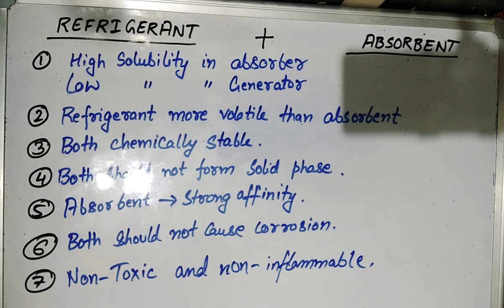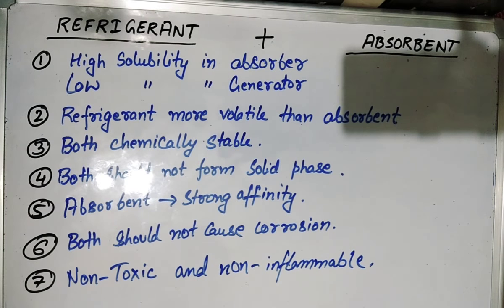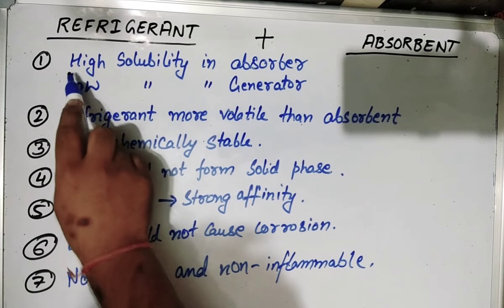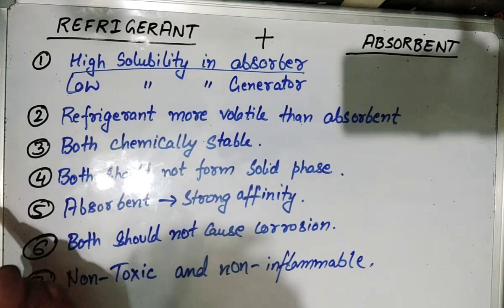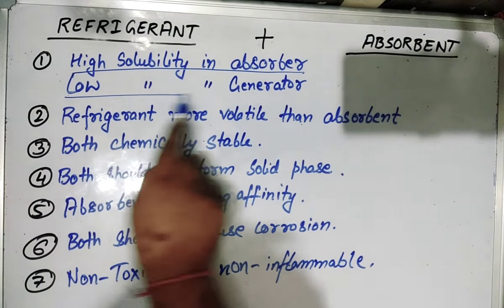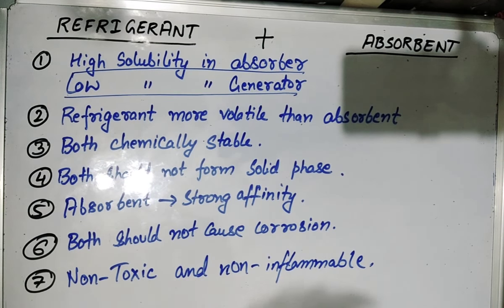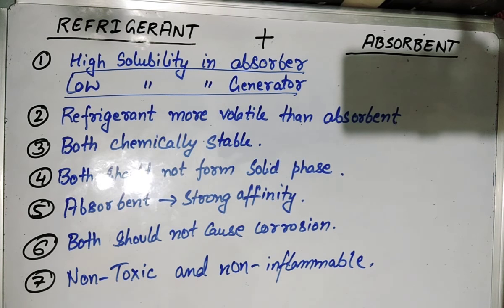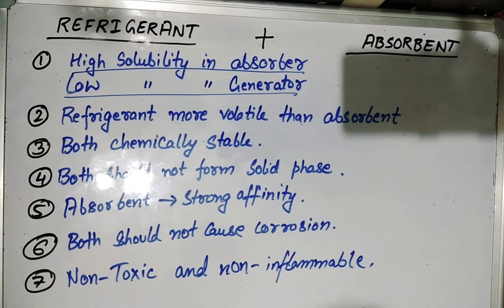Now the characteristics of the mixture of refrigerant and absorbent that should be possessed: the first thing is that it should have high solubility in the absorber but low solubility in the generator. The second thing is that the refrigerant should be more volatile than the absorbent. The third point is that both should be chemically stable and both should not form any solid phase, as it can cause blockage in the system.